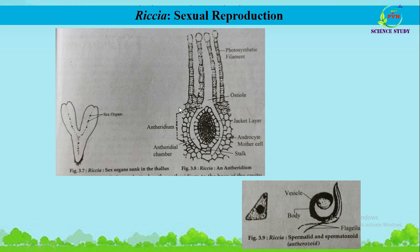Now we will study the structure of the male sex organ, the antheridium, in Riccia. The mature antheridium is a multicellular and elongated structure enclosed in an anthridial cavity present on the dorsal surface. It consists of a stalk and a body. The stalk is multicellular and attaches the antheridium to the base of the cavity. The body is ovoid or pear-shaped and is surrounded by an outermost sterile jacket layer, also called the anthridial wall, which is one cell in thickness and protective in nature. Inside the jacket layer is a mass of fertile cubical cells called androcyte mother cells.